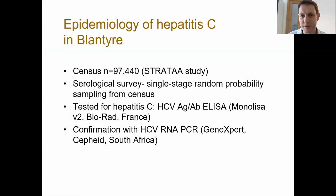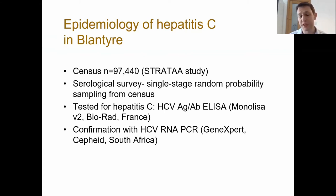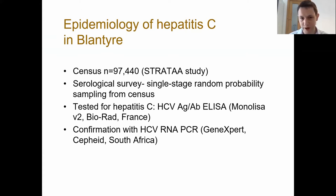La recherche de la séroépidémiologie de la typhoïde fait partie de l'étude. Un recensement dans le township a révélé que 100 000 personnes y résidaient. Il était suivi d'une enquête sérologique fondée sur un échantillonnage de probabilités aléatoires à étapes uniques, axée sur la liste du recensement. Nous avons ensuite effectué des tests de l'hépatite C chez les sujets en utilisant un test laboratoire combiné d'antigènes et d'anticorps. L'avantage d'un test d'antigènes de 4ème génération est qu'il permet la détection plus rapide des individus récemment infectés qu'avec le test d'anticorps seul. Nous avons confirmé ces tests à l'aide du test ARN VHC PCR.